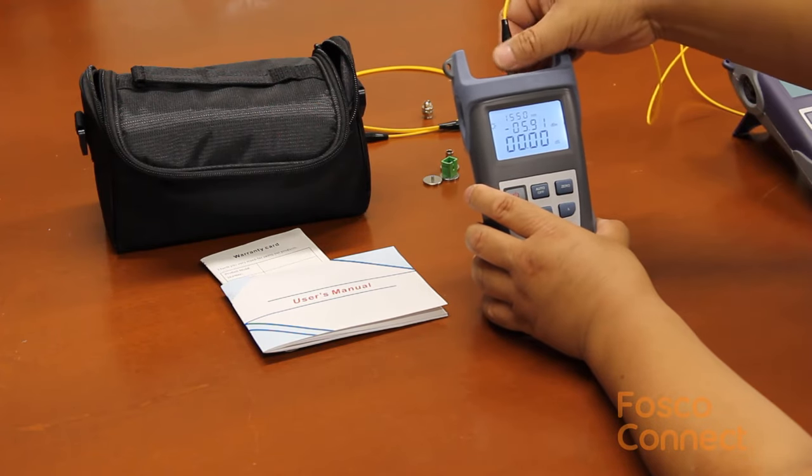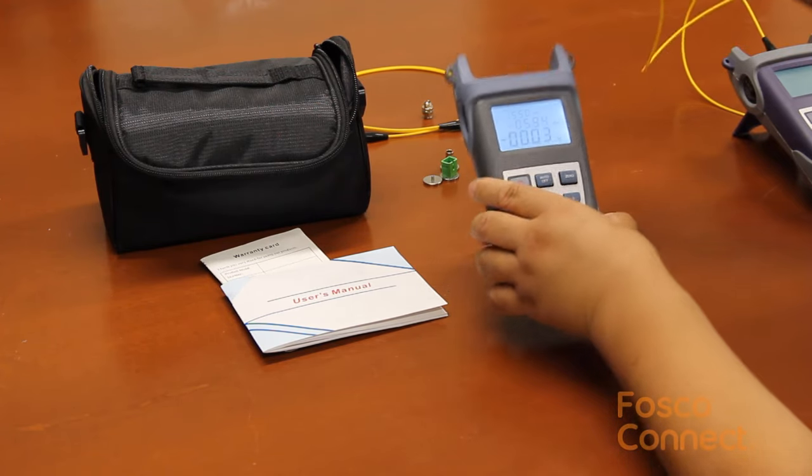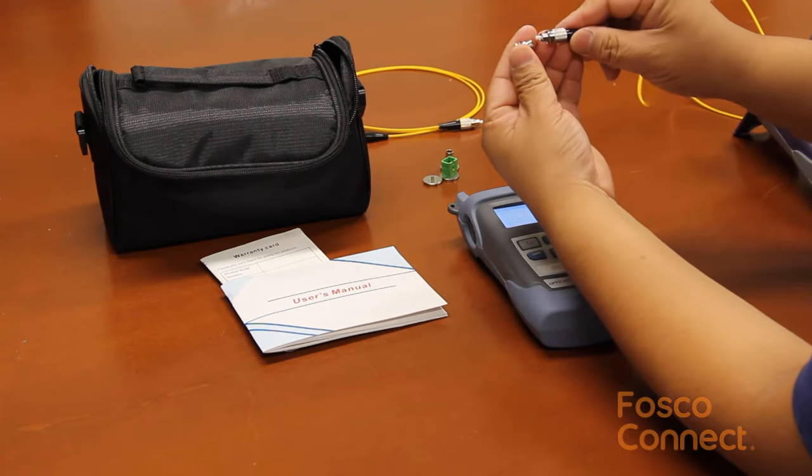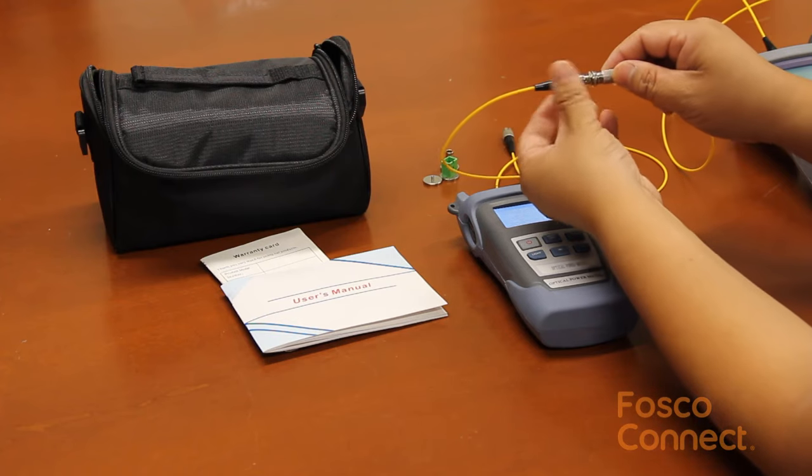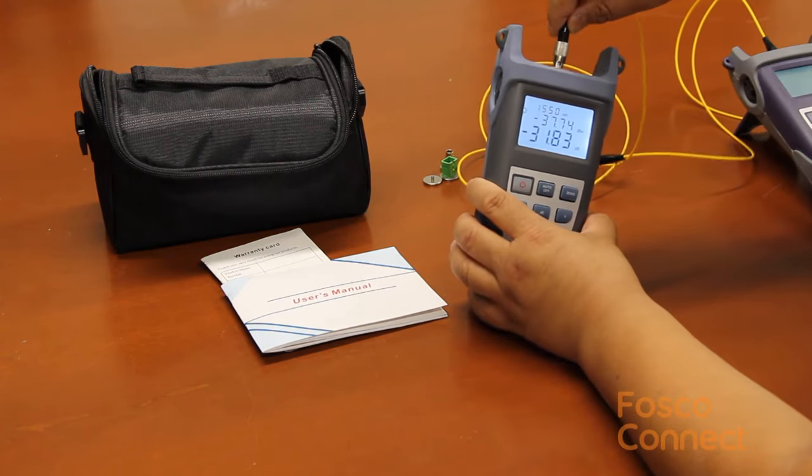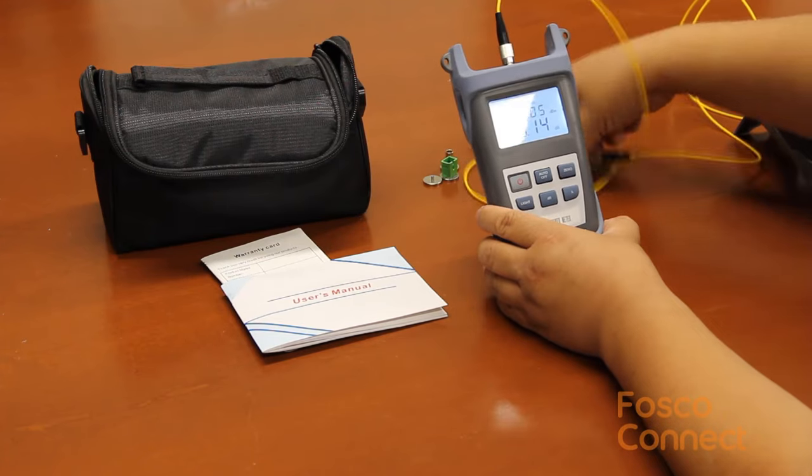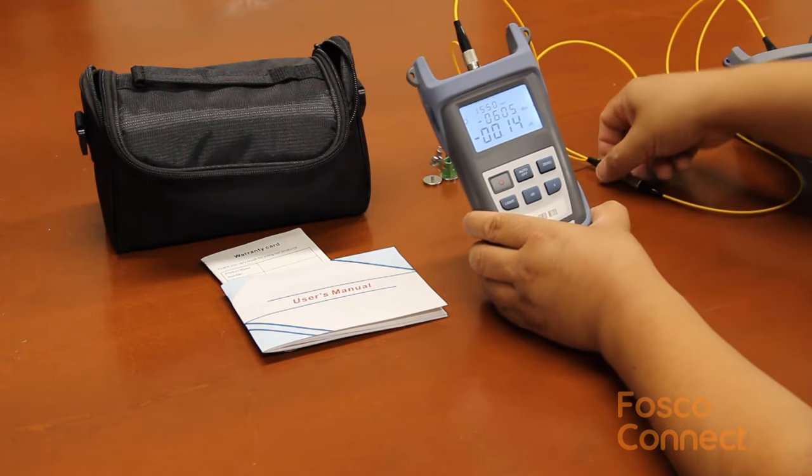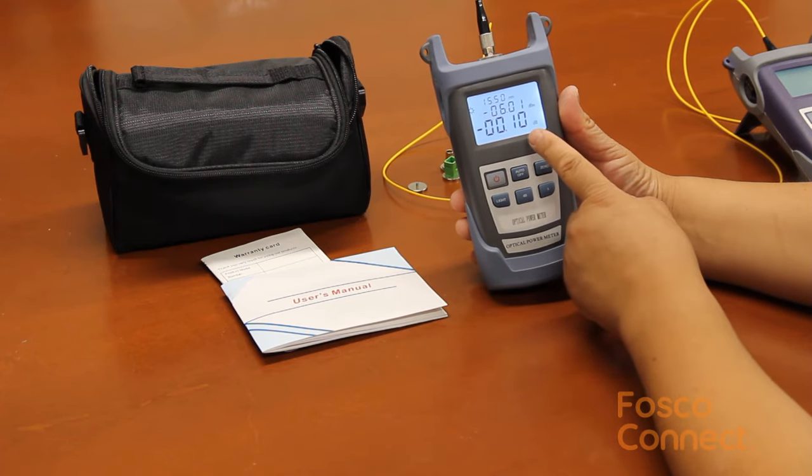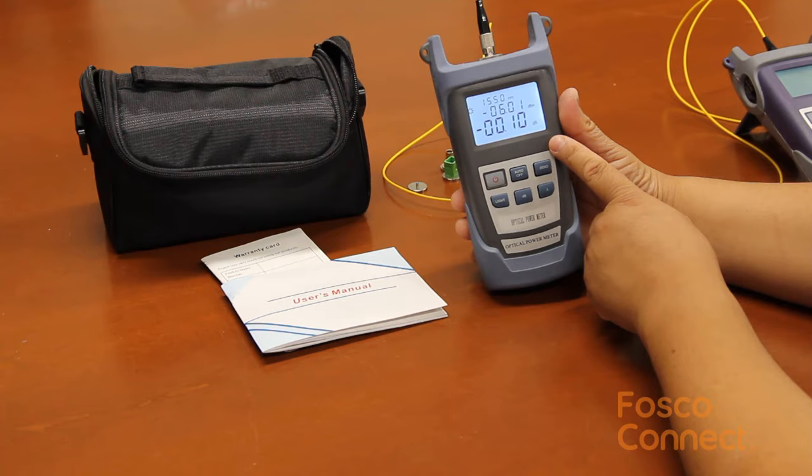Now let's plug in our jumper cable under test. Plug in one side to the light source adapter and the other end to the power meter. Let's make sure the cable is not under any stress. Now the power meter reads as negative 0.1 dB insertion loss.